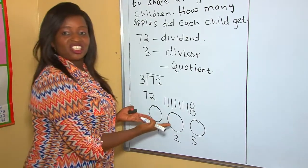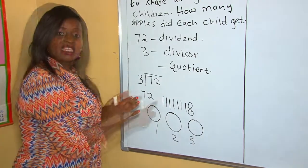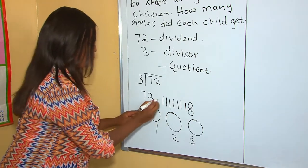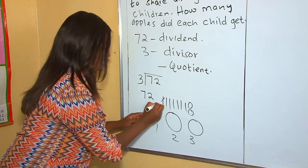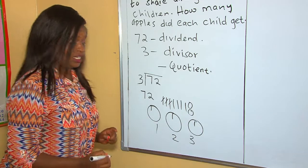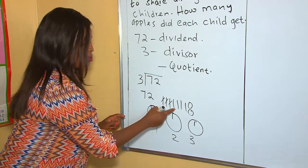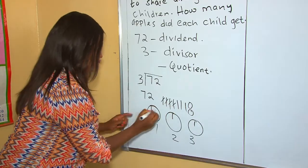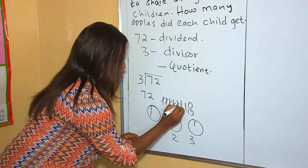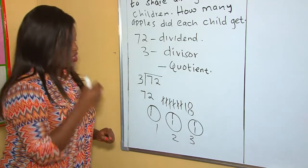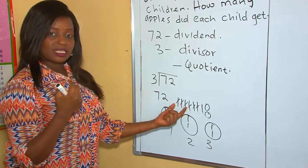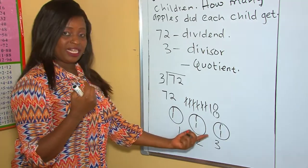Now we start sharing the apples. In this kind of division, you begin with the tens. So we pick the first ten, we give to the first child, the second ten to the second child, the third one to the third child. We also, there are remaining other tens, so we pick the other ten, and the other ten. When you see, six tens have been shared, so remaining with one ten and two ones.